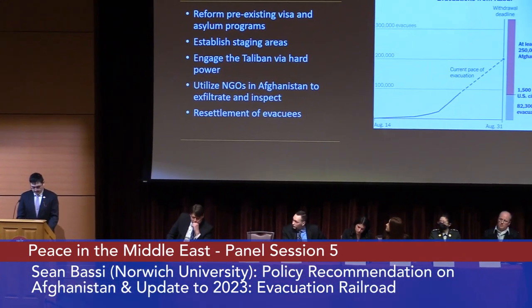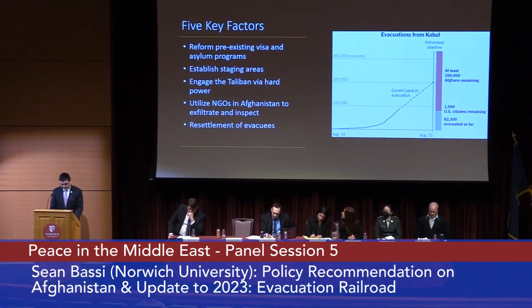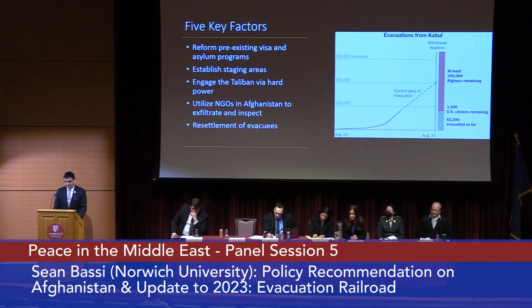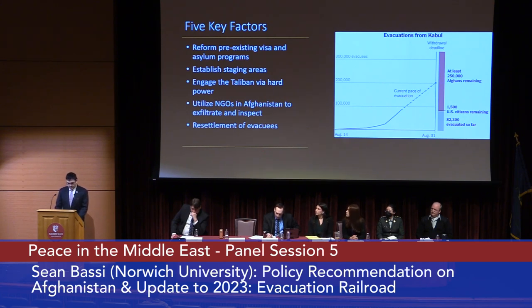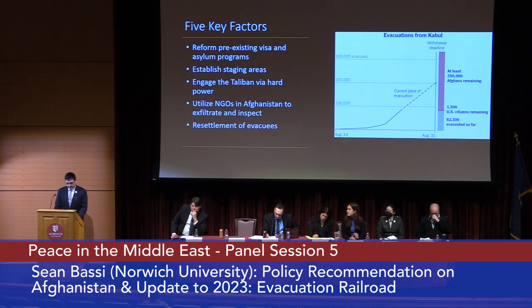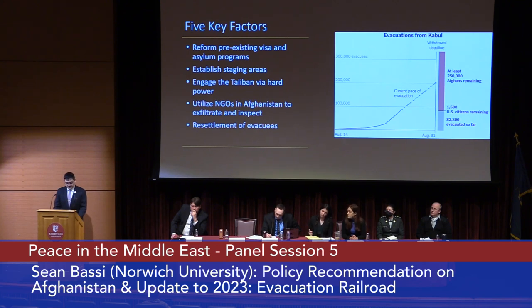The five key factors are: first, our system of asylum and visas needed to be retooled to prepare for mass exfiltration. Second, even with political will, we would need a hosting country as a staging area to host individuals for screening and care. Third, we would need to develop a means to engage with a regime which could be decentralized, revisionary, and unwilling to cooperate. Fourth, we would need a third party to actively be in-country to exfiltrate individuals and ensure compliance with agreements made with the Taliban. And finally, we must facilitate the resettlement of evacuees.